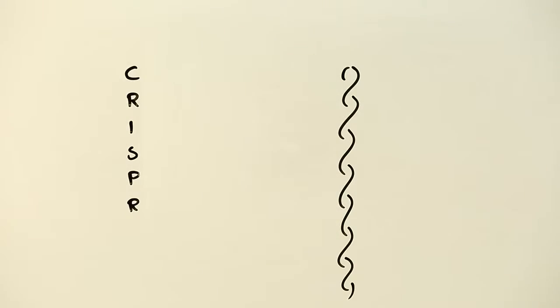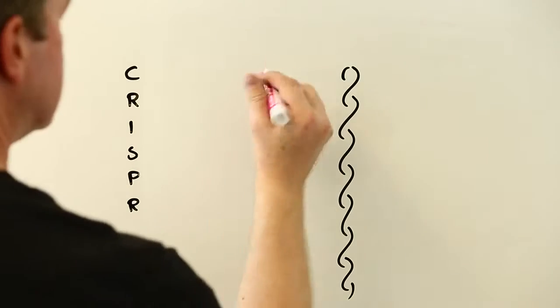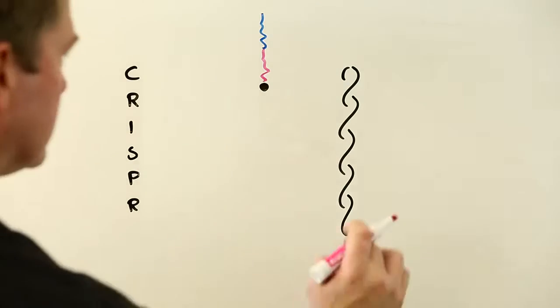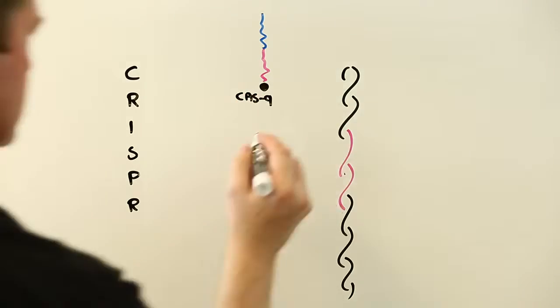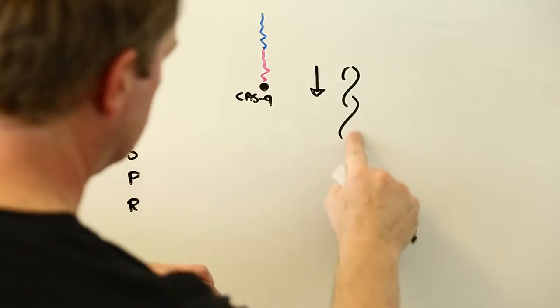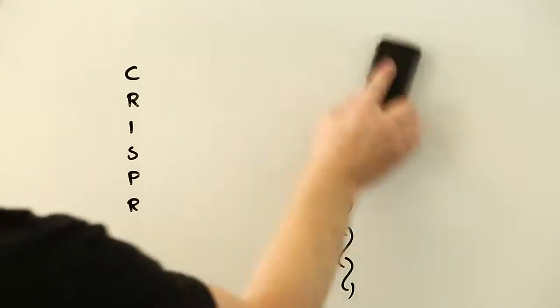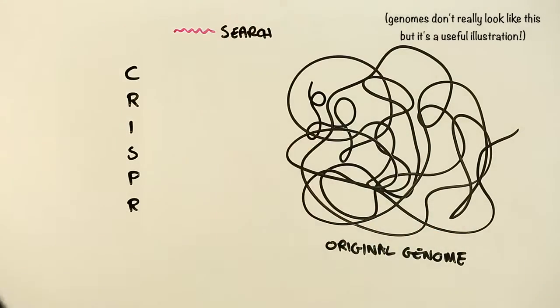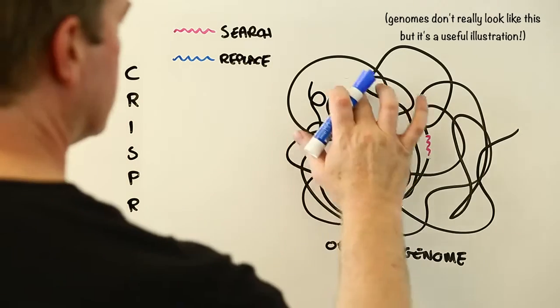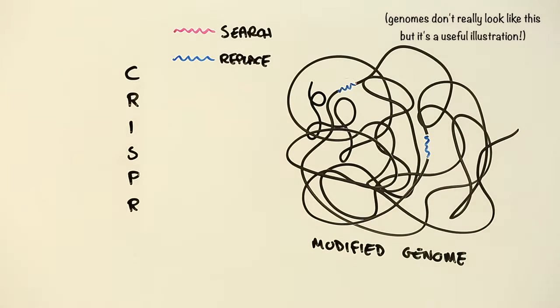CRISPR uses specially designed molecules that run along the strands of DNA in an organism's genome and seek out specific sequences of genetic code. Once found, they snip out the old code and paste in the new. It's essentially a sophisticated biological search and replace technology that allows scientists to easily modify the genetic traits of an organism, such as replacing the parts of a mosquito's genome that allows it to host malaria-causing parasites, for instance.